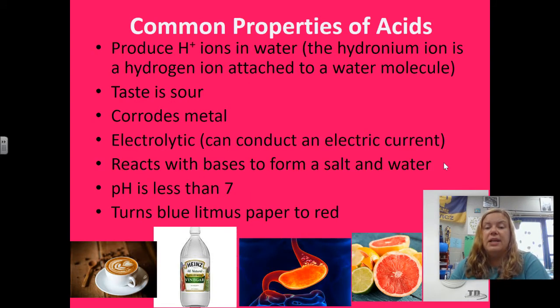Now, some common properties of acids. You've probably heard of these before, but acids produce hydrogen ions in water. And again, we're looking at the model where that hydrogen ion actually attaches to a water molecule and becomes that hydronium ion. Typically, acids taste sour, not that you should taste all acids. Acids can definitely corrode metal. So if you ever need to clean up some rust on something, sometimes even something like Coca-Cola works. Acids are also electrolytic, meaning that they can conduct an electric current. The reason is because there's so many ions present in the solution, and ions are what basically carry electricity. Also, acids react with bases to form a salt and water. The pH is less than 7. And finally, it turns blue litmus paper to red. So red indicates an acid.